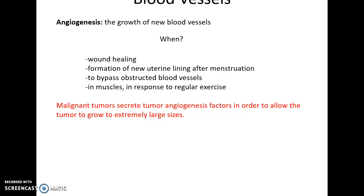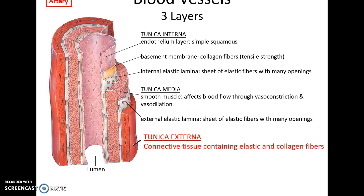Angiogenesis is the growth of new blood vessels. It can occur to heal damaged wounds, for formation of uterine lining after menstruation, to bypass obstructed blood vessels, to create more capillary beds in muscle tissue from exercise, and also to provide blood for malignant tumors — so tumors can cause blood vessels to form to help them get extremely large.